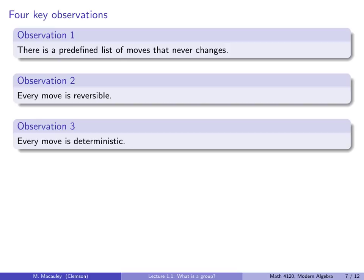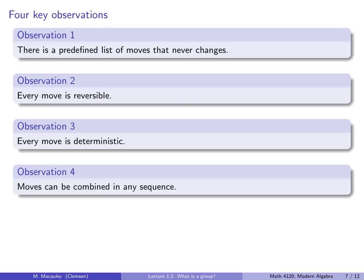Observation four, moves can be combined in any sequence. So if I do one sequence of twists, and then another sequence of twists, I can just do those back to back, and I get a new sequence of twists. And this is, again, something that does not arise in, like, poker or checkers. So again, in this setting, a move is a twist of one of the six faces by zero degrees, 90, 180, or 270. And of course, you don't need to, if you want to only count twists of 90 degrees, that's fine. Because a twist of 180 is just two consecutive twists of 90.